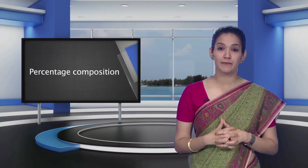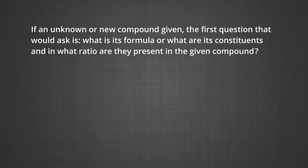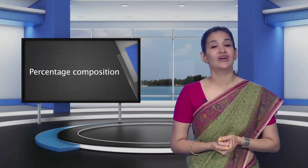Let's now look at percentage composition. Until now we dealt with the number of entities in a given sample. But many times, information regarding the percentage of a particular element in a compound is required. For an unknown compound, the first question is: what are the constituents and in what ratio are they present? For known compounds, this information verifies whether the sample contains the same percentage of elements as a pure sample, allowing purity to be checked.